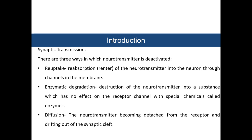When the action potential reaches the axon terminal, it causes membranous sacs called vesicles to move toward the membrane. The vesicle membrane fuses with the axon terminal membrane, releasing its contents into the synaptic space. There are three ways a neurotransmitter is deactivated: reuptake (re-entry into the neuron through membrane channels), enzymatic degradation (destruction by enzymes into a substance with no receptor effect), and diffusion (the neurotransmitter detaches from the receptor and drifts out of the synaptic cleft).